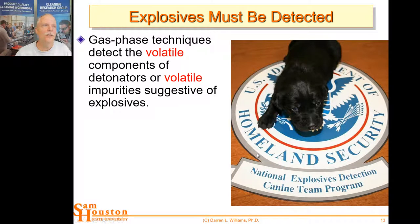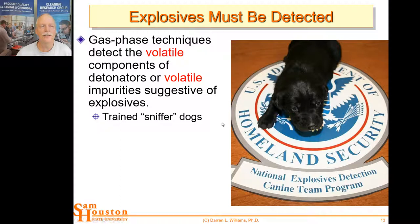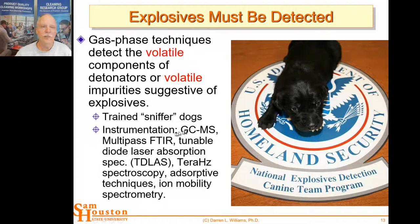Explosives can also be detected by canines. Dogs can be trained to sniff for explosives, money for drug transfers, and cash being taken on planes. We also have instrumentation: GCMS, multi-pass IR, tunable laser diode absorption spectroscopy, terahertz spectroscopy — not just imaging — and other adsorptive techniques and ion mobility spectrometry. Let's talk about these different techniques that can be used to detect volatile compounds.